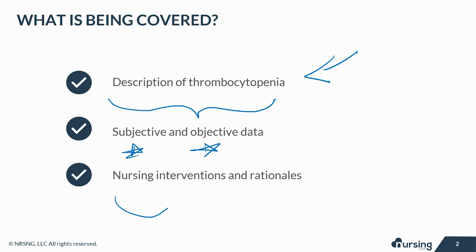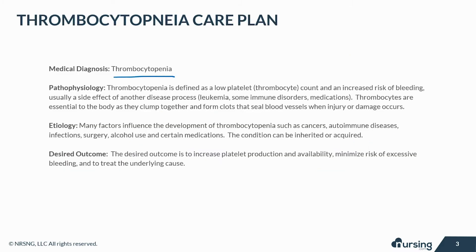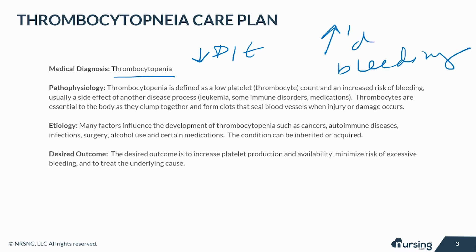Thrombocytopenia is defined as a low platelet count and an increased risk of bleeding. Usually thrombocytopenia is a side effect of another disease process like leukemia, some immune disorders, or even medications. Thrombocytes are essential to the body because as they clump together and form clots, they seal blood vessels when injury or damage occurs.